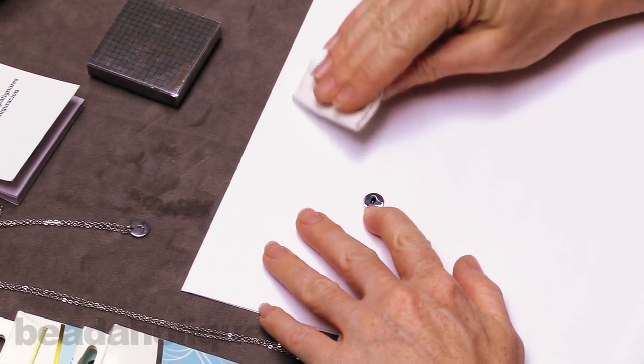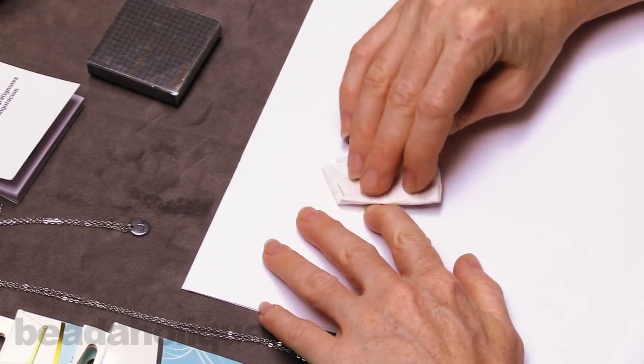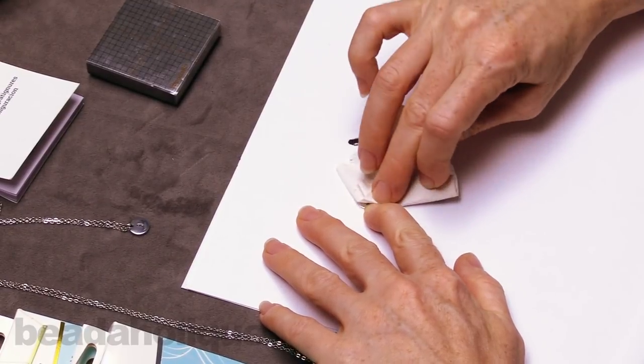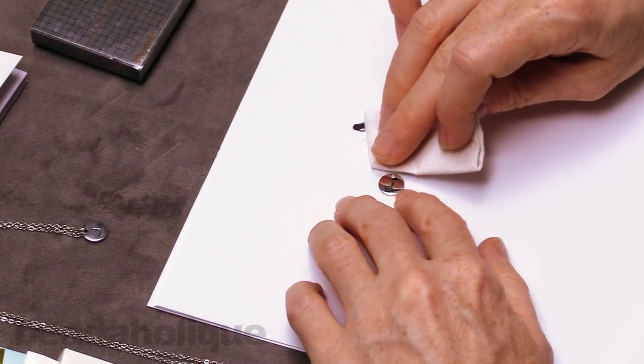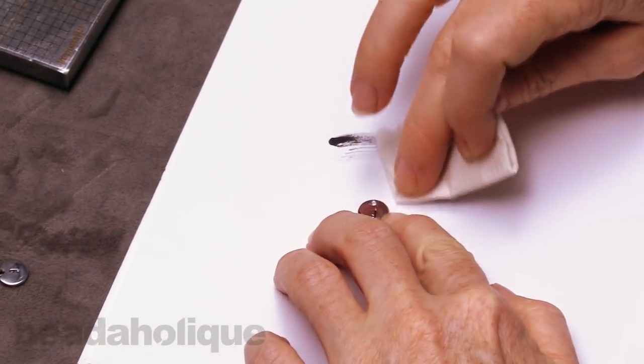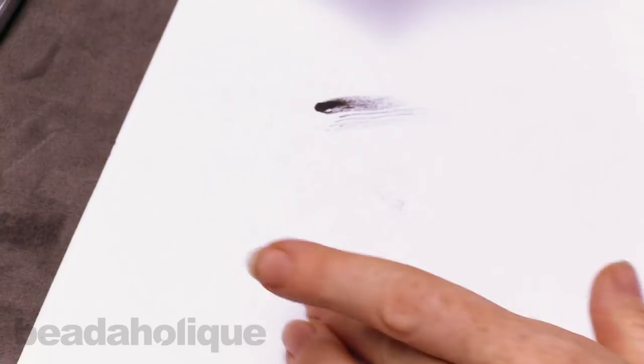And just wipe it. There you go. And kind of give your little stamping blank a little polishing while you're at it. And there we go.